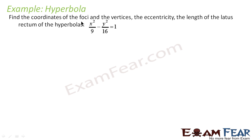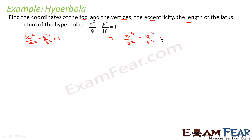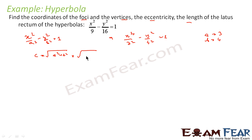For this hyperbola, we have to find the coordinates of foci, vertices, eccentricity, and length of LR. This is of the form x squared by a squared minus y squared by b squared is equal to 1, and this is nothing but x squared by 3 squared minus y squared by 4 squared is equal to 1. So we can say a is equal to 3 and b is equal to 4. c is equal to root of a squared plus b squared, which is root of 9 plus 16, that is 5.